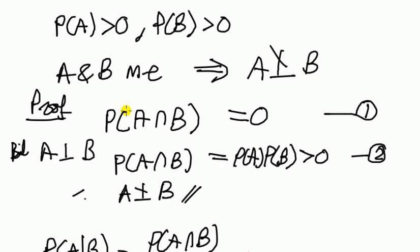Okay, so proof. If probability of A and B is zero when A and B are mutually exclusive, let's call this one. But if A and B are independent, then probability of A and B is equal to the product of the individual probabilities, which we know is bigger than zero, because we're looking at non-trivial events.